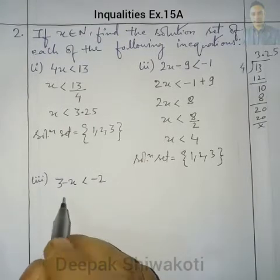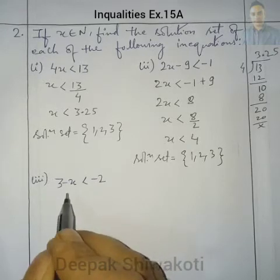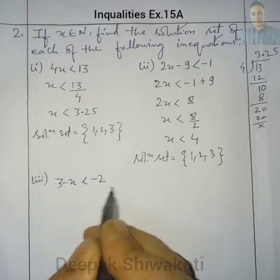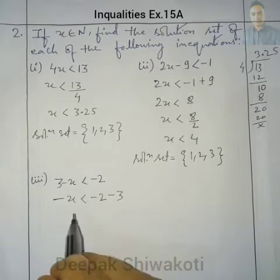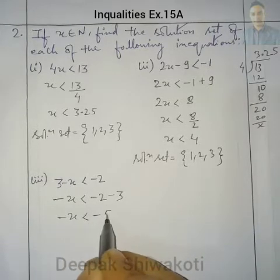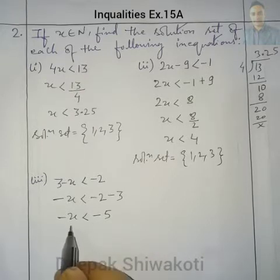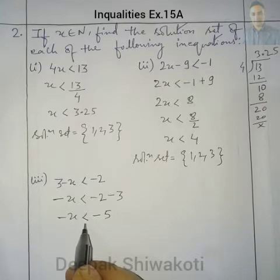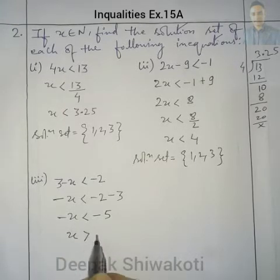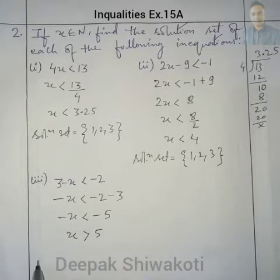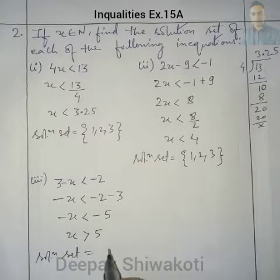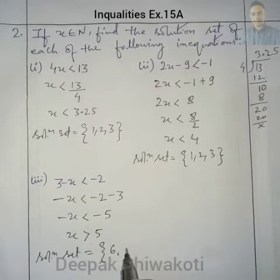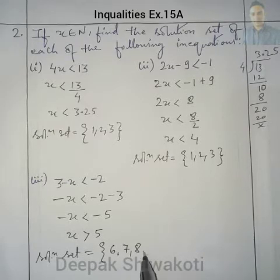Question 3: 3 - x < -2. Subtracting 3 from each side: -x < -2 - 3, so -x < -5. Multiplying each side by -1 (the inequality sign reverses): x > 5. So the solution set from natural numbers is {6, 7, 8, ...} and it goes on.